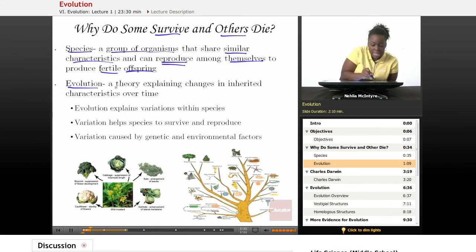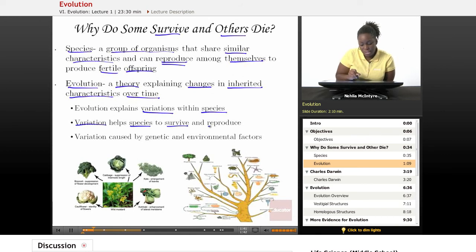Now evolution, it is a theory that is our best explanation of why certain changes occur over many generations within a species, and we see those changes in inherited characteristics over time.